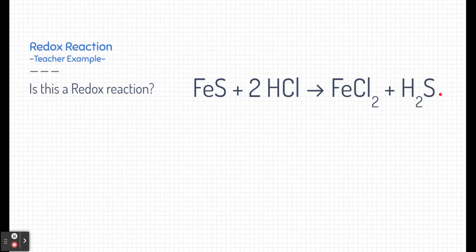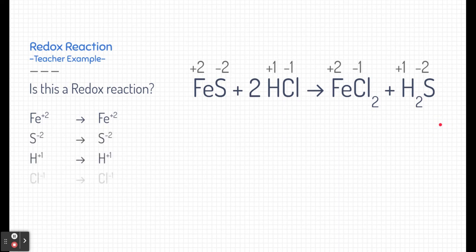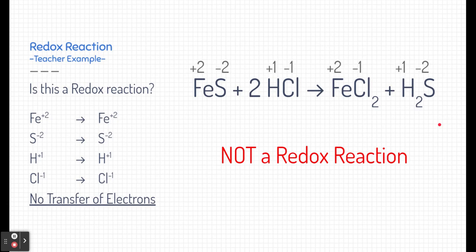Let me give you one more example. Is this a redox reaction? Well, if we start off and look at the change in charges, iron two sulfide is plus two minus two, and hydrochloric acid is plus one minus one. If we look at the products, iron two chloride is plus two minus one, and hydrogen sulfide or dihydrogen sulfide is positive one and negative two. If we follow the charge states from beginning to end, iron doesn't change. Sulfur doesn't change. Hydrogen doesn't change, and chlorine doesn't change either. There are no transfer of electrons in this reaction. This is not a redox reaction.